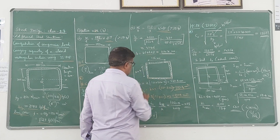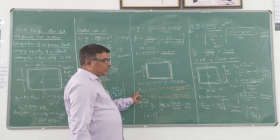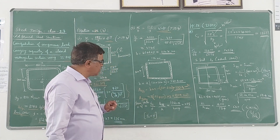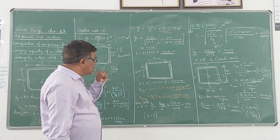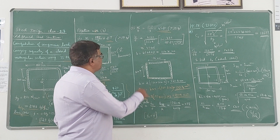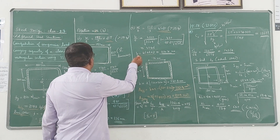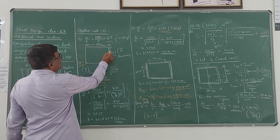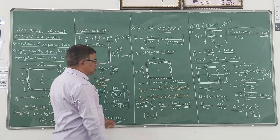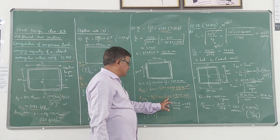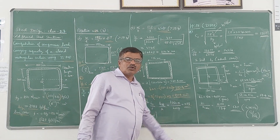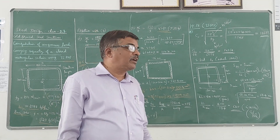Next, let us calculate the gross area of this section using the centerline dimensions: (197 + 137) × 2 × 3mm = 2004 mm².